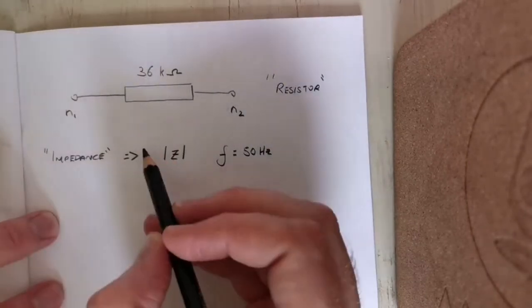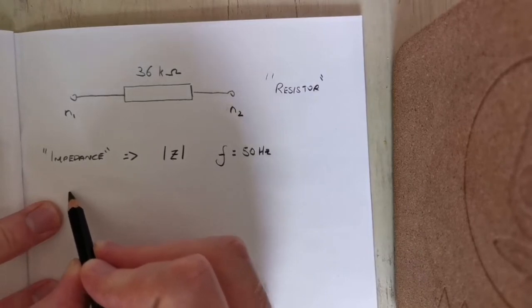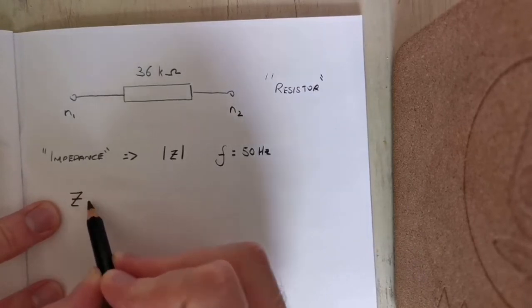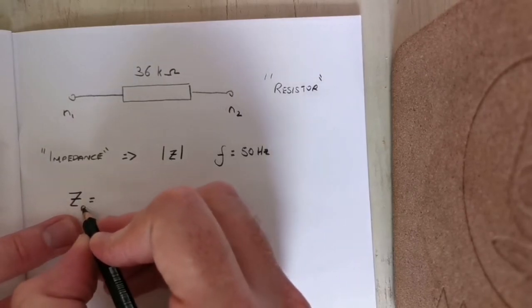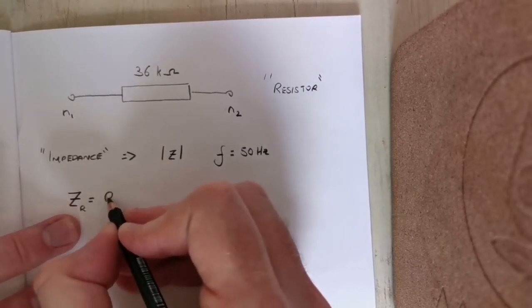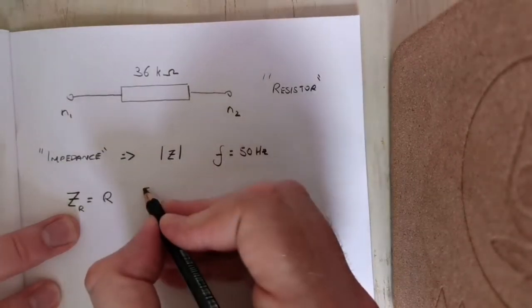When you're asked what is the impedance or the magnitude of this impedance, the impedance of any resistor is just its resistance value, and that's measured in ohms.